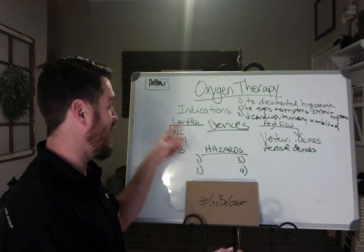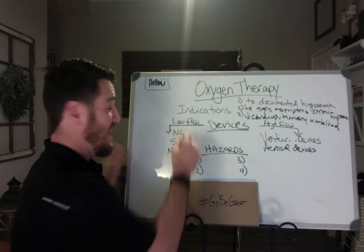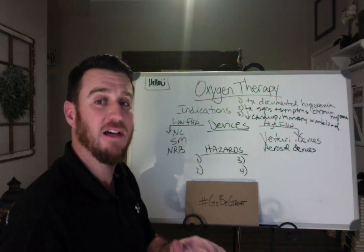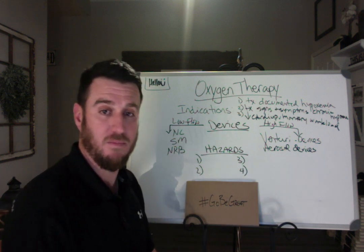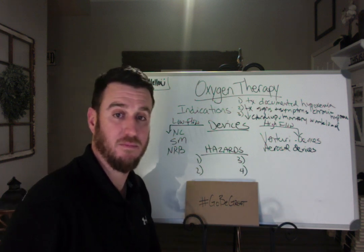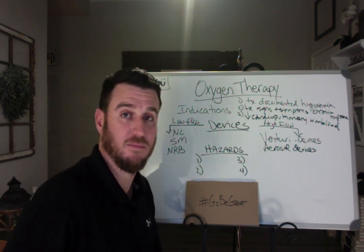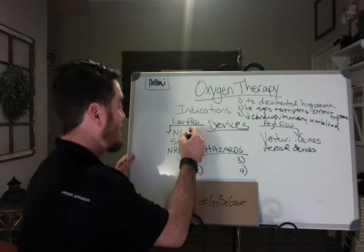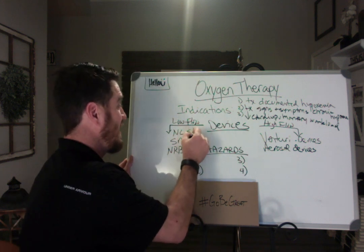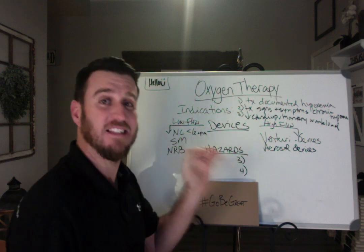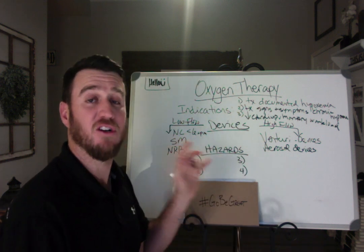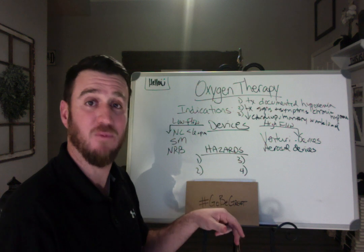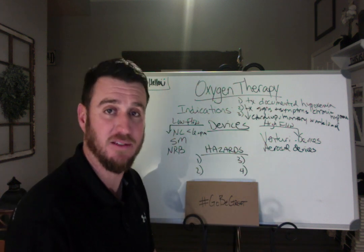When we talk about low-flow devices, we talk about a nasal cannula. A nasal cannula — the max is 6 liters per minute. It has to stay less than 6 liters per minute. If you have to go greater than 6 liters per minute, you've got to go to a new device.